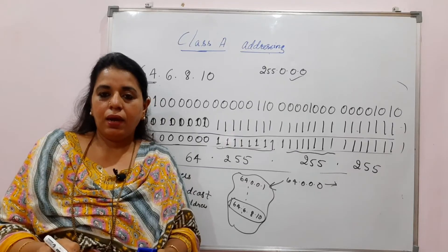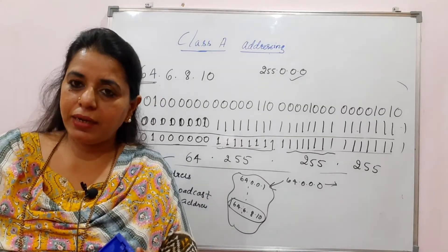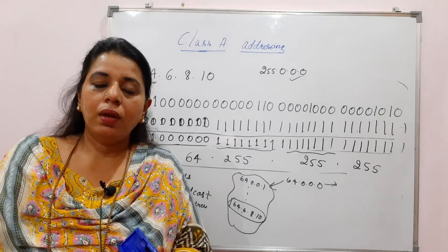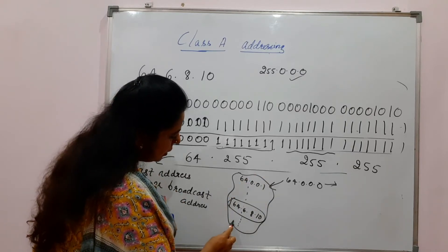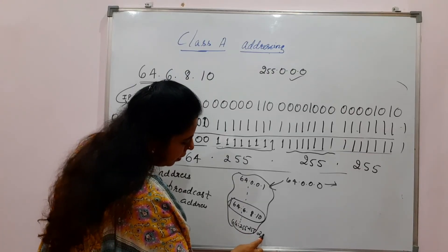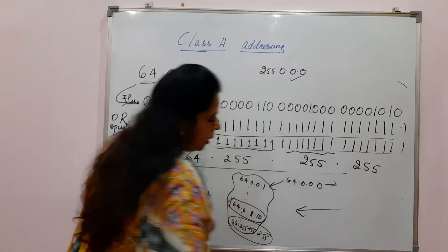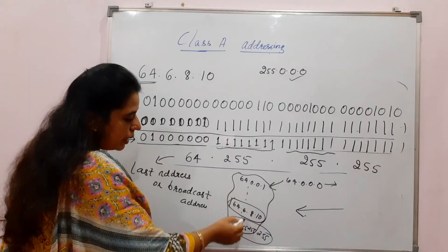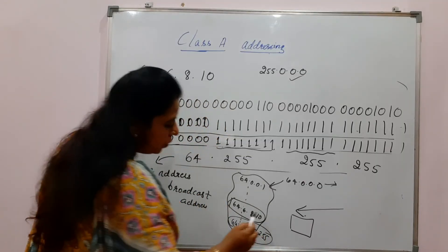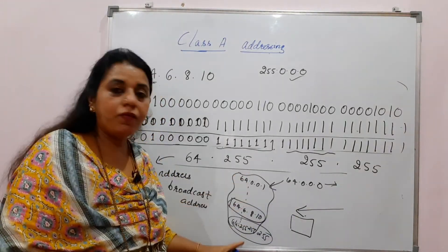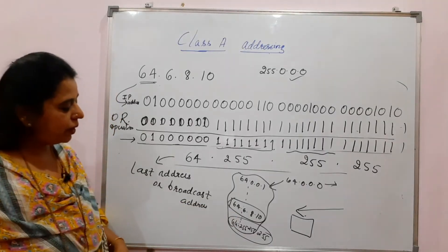Remember, the first address and the last address are not assigned to any host. The first address is the network address, and the broadcast address is also not assigned to any user. The broadcast address is used when someone wants to send data or a message to all users in the network — the packet will have destination address 64.255.255.255, and it will be received by all hosts in the network. That is why this address is not given to any user.